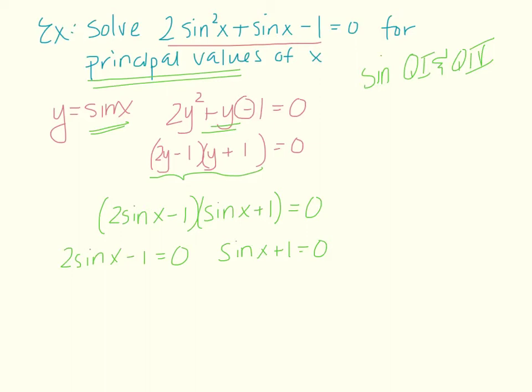So I have 2 sine x minus 1 equals 0 and sine x plus 1 equals 0. On the left hand side, I move the 1 over and divide by 2. And I get sine x equals 1 half. On this next one, I just move the 1 over and I get sine x equals negative 1.